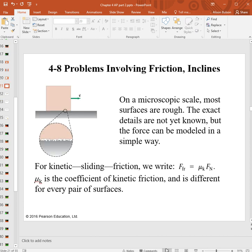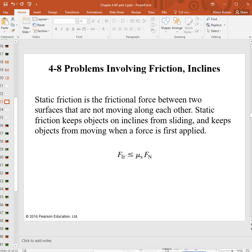So static friction, which was alluded to in that table just now, is the frictional force between two solid surfaces that are not moving past each other, but that are attempting to move past each other. So static friction keeps objects on inclines from sliding. It keeps objects from moving when a force is first applied. And you'll notice that this equation looks a lot like the previous equation, except it's got an unequal sign.